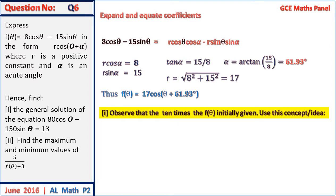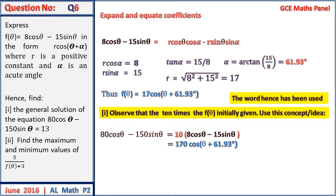The word 'hence' means we should use this answer for the remaining parts. For the general solution of 80cosθ - 150sinθ = 13, we observe that they have multiplied the function by 10. So this equals 10 × (8cosθ - 15sinθ), and since 8cosθ - 15sinθ = 17·cos(θ + 61.93°), we replace it to get 170·cos(θ + 61.93°).